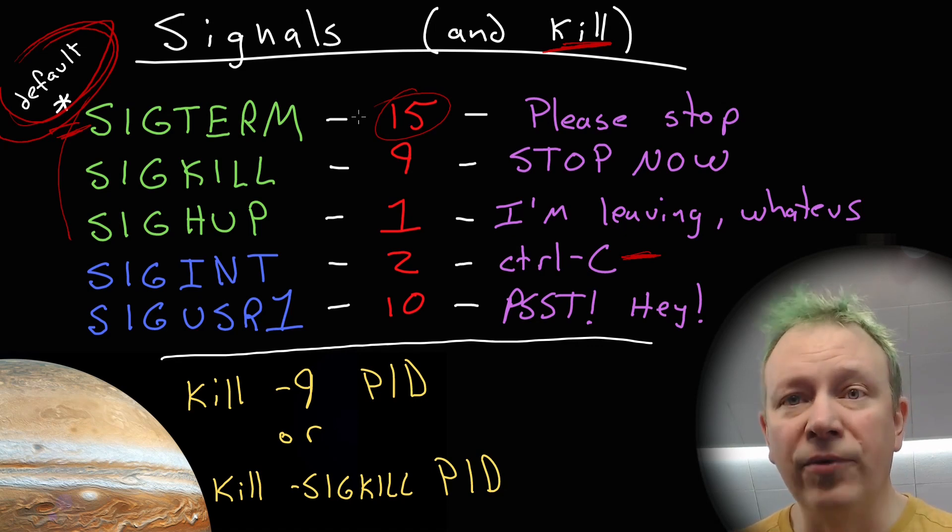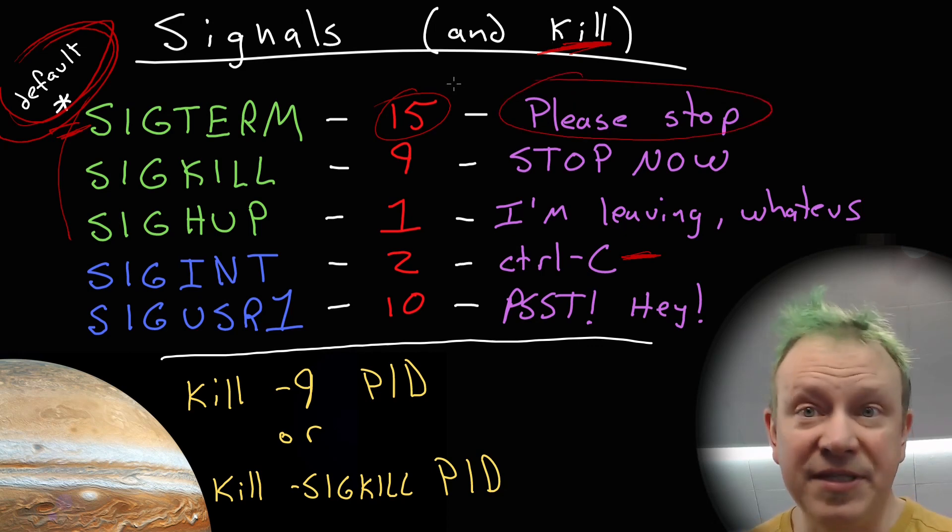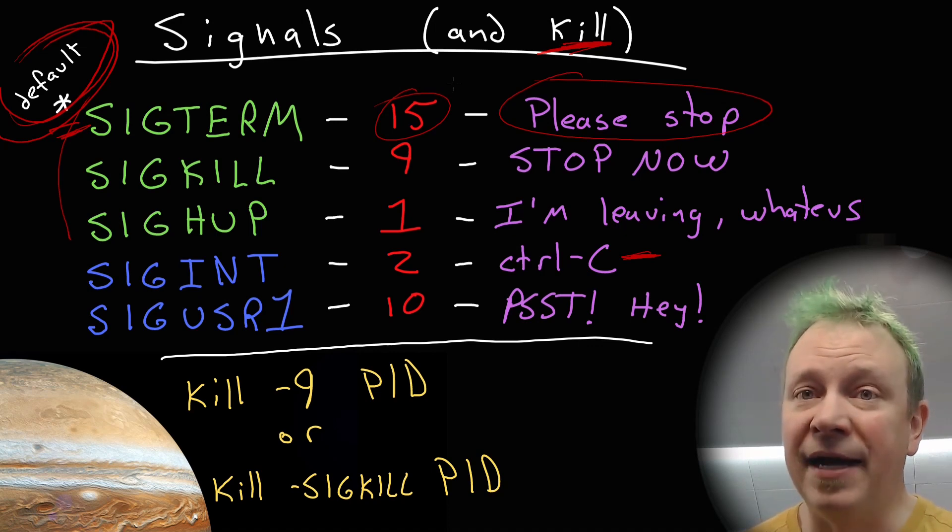SIGTERM is the default and that stands for signal terminate. It also has a number associated with it. Each of these signals has a number. SIGTERM is also signal 15. That just says to a running program, hey, please stop. And the please part is important because if you send SIGTERM, that's like the default way to kill it. If you say kill an application, it sends SIG 15 or SIGTERM, and it's basically telling it, hey, please stop, stop running, close yourself and stop.